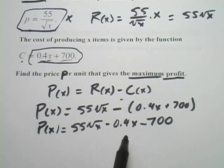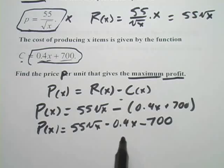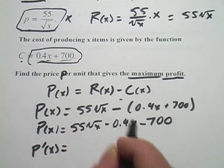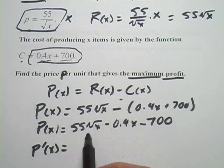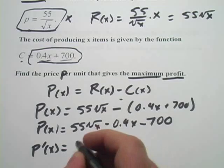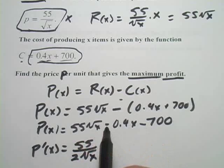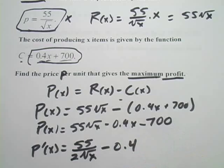So we're going to take the derivative and then find the zeros for the derivative and examine those. So the derivative here, p prime of x, this will be, let's see, this is x to the 1 half. So this is going to be 55 over 2 times x to the negative 1 half.